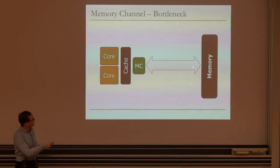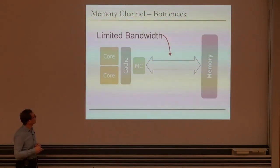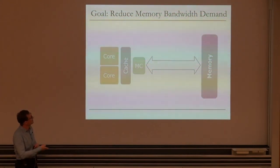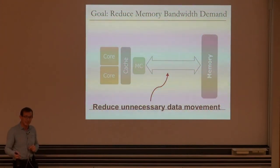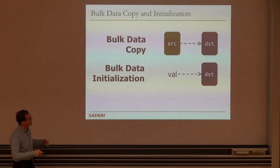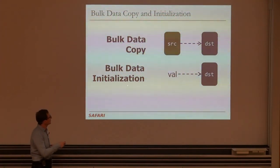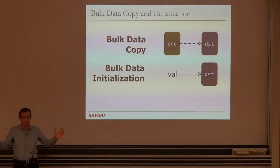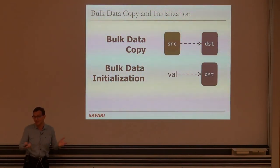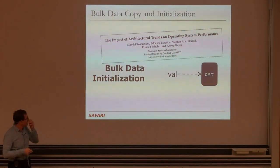The title is "Fast and Energy-Efficient In-DRAM Bulk Copy and Initialization." Following the outline: background, problem, and goal first. A memory channel is a bottleneck in existing systems — it has limited bandwidth and consumes high energy. The goal of this paper is to reduce memory bandwidth demand by reducing unnecessary data movement. One big source of unnecessary data movement is bulk data copy and bulk data initialization. If you're copying a 4 KB page to another page, or initializing a huge database to all zeros, that all goes through the memory channel today.